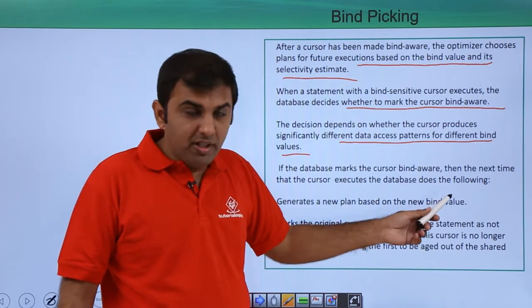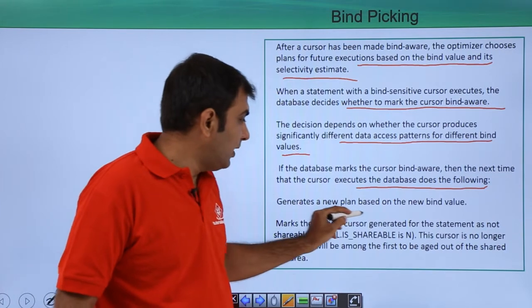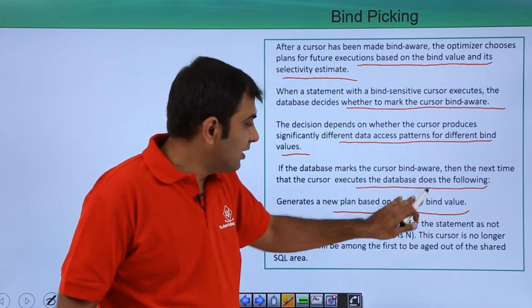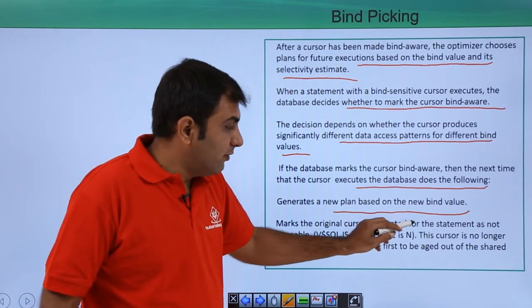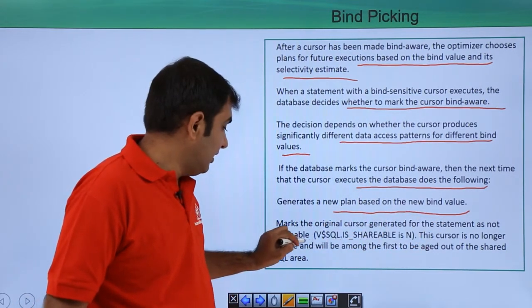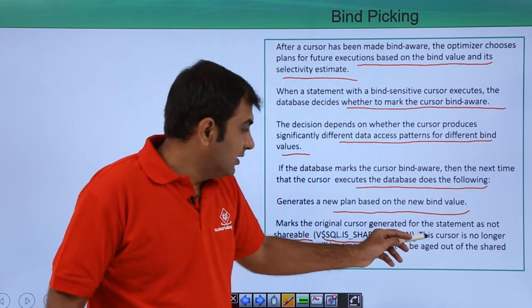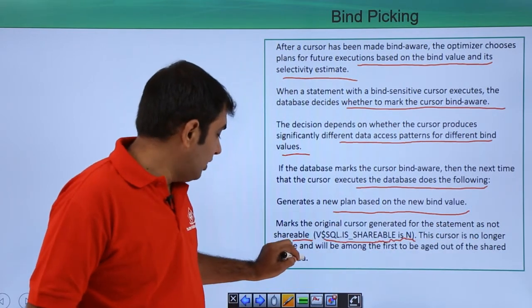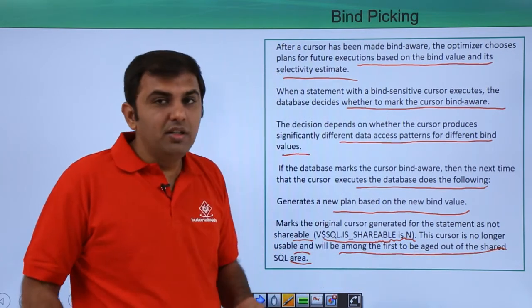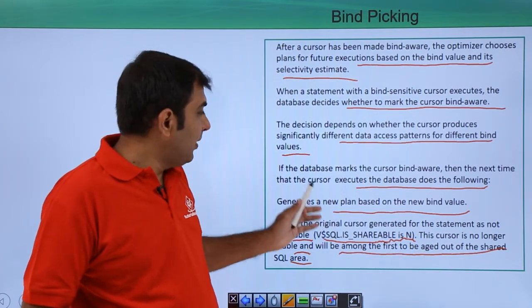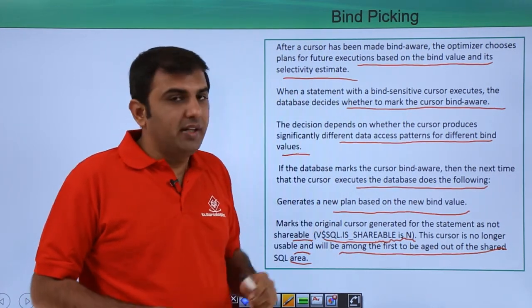If the database marks a cursor as bind aware, the next time the cursor is executed the database generates a new plan based on the new bind variable. After that it marks the original cursor as not shareable - in V$SQL the is_shareable column will be marked N, and this cursor is no longer usable and will be among the first to be aged out from the shared SQL area.